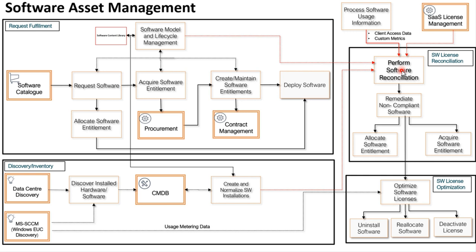The top right component deals with this reconciliation process and provides information on compliance position for all your software models, products, and publishers. If there is a compliance issue, you can either allocate an entitlement to an installation to make it authorized, purchase more entitlements for the missing ones, or optimize licenses by uninstalling the software, reallocating it to a different device or user, or deactivating the license. Optimization uses software usage data and reclamation rules to process candidates for removal.